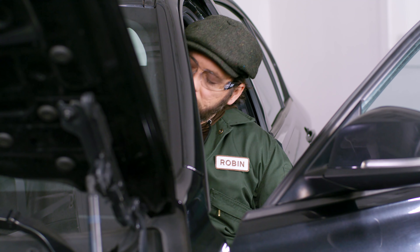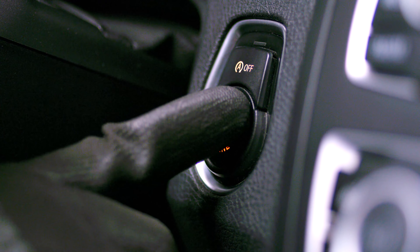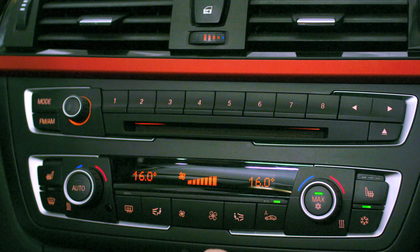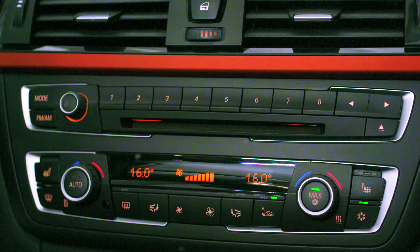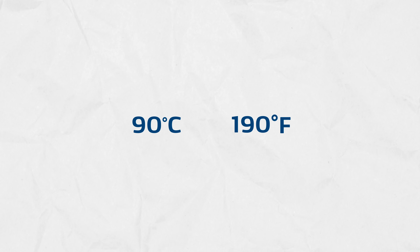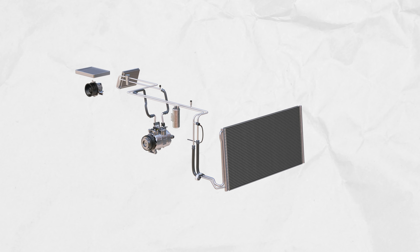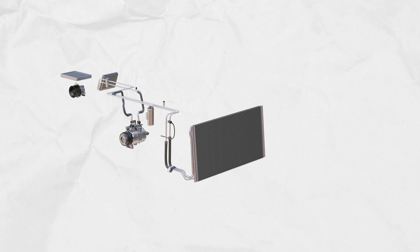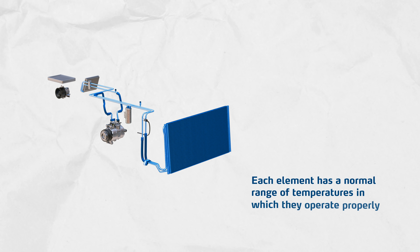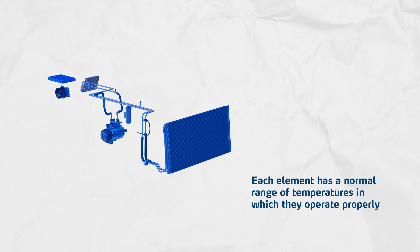First, start the engine and set the AC on to the coldest air and maximum blow. Wait until the engine achieves its proper operational temperature, which is typically 90 degrees Celsius or around 190 degrees Fahrenheit, and you're good to go. Depending on the pressure side where the specific AC loop components are located, each element has a normal range of temperatures in which they operate properly. Temperatures outside of the normal range — too high or too low — can indicate a number of potential issues.